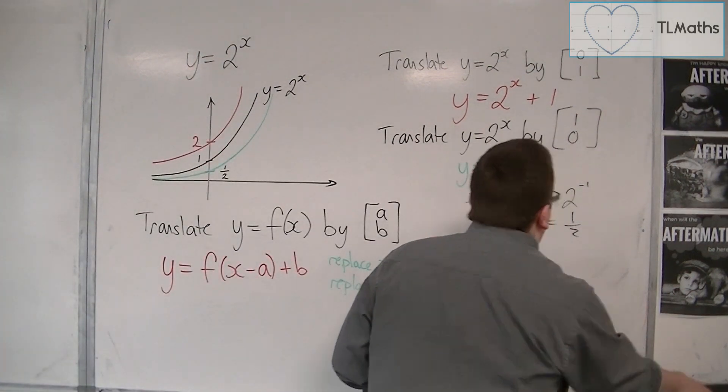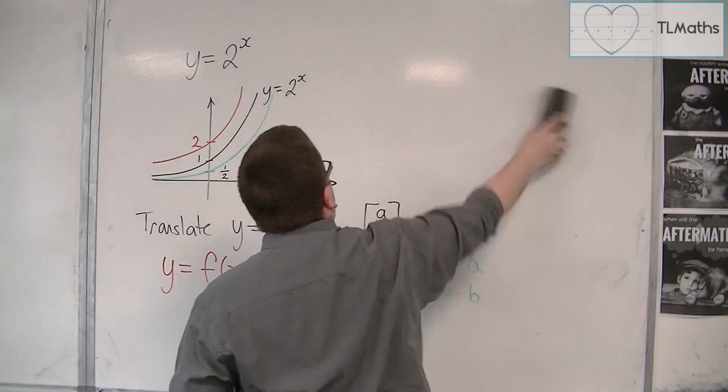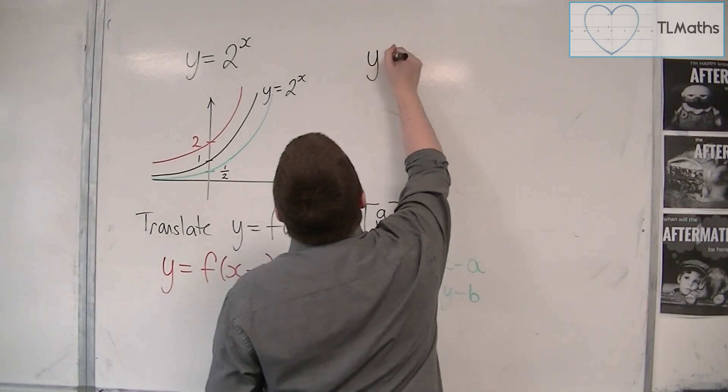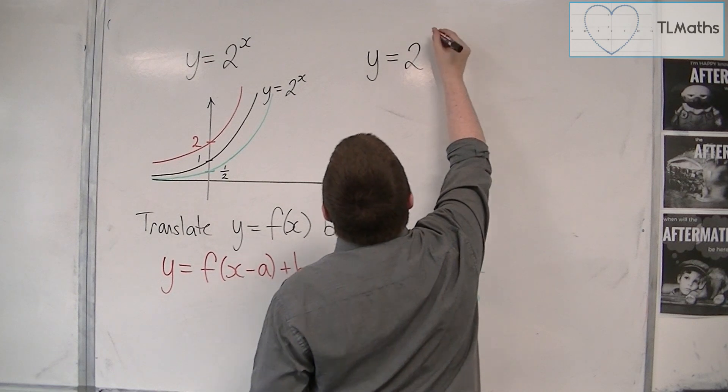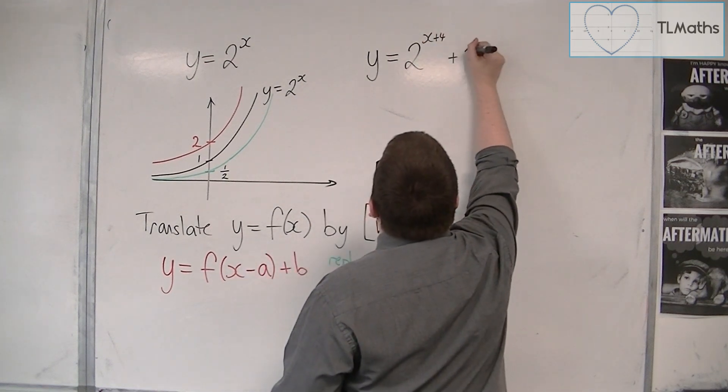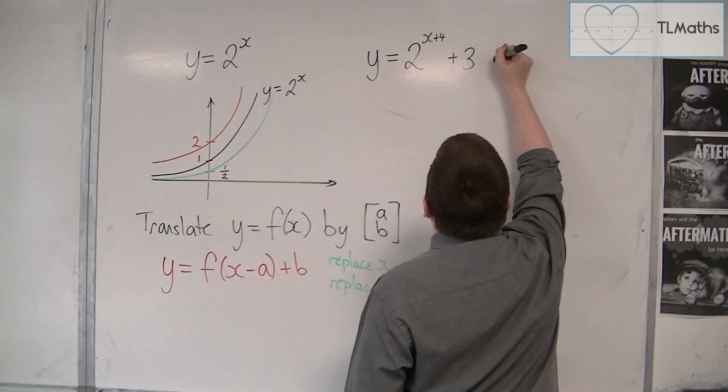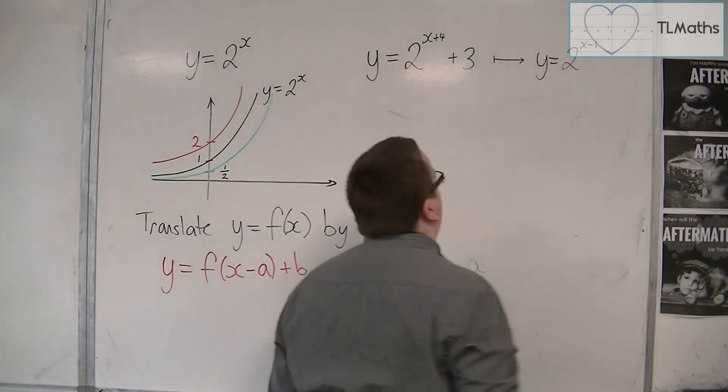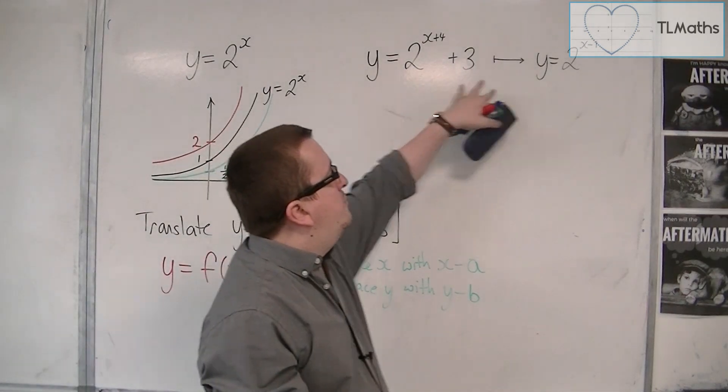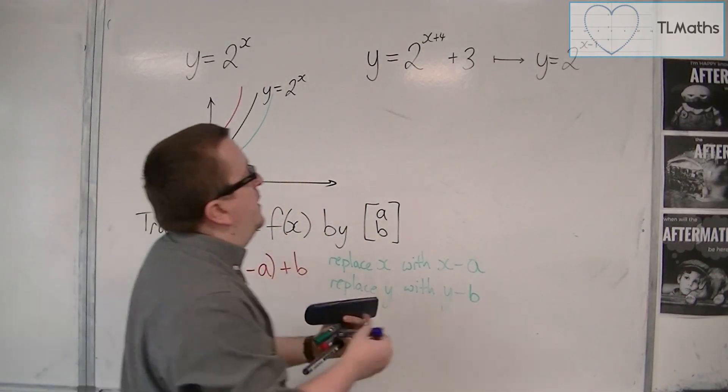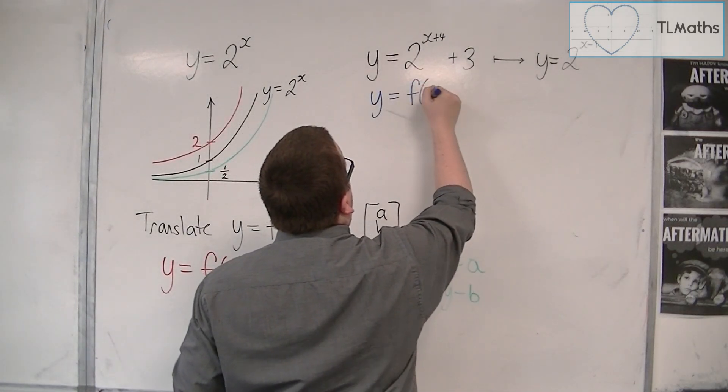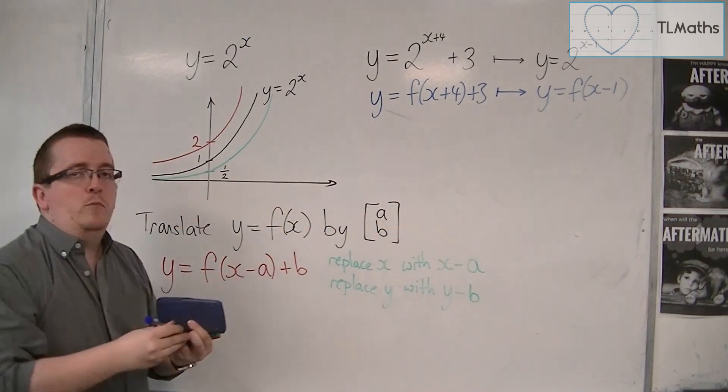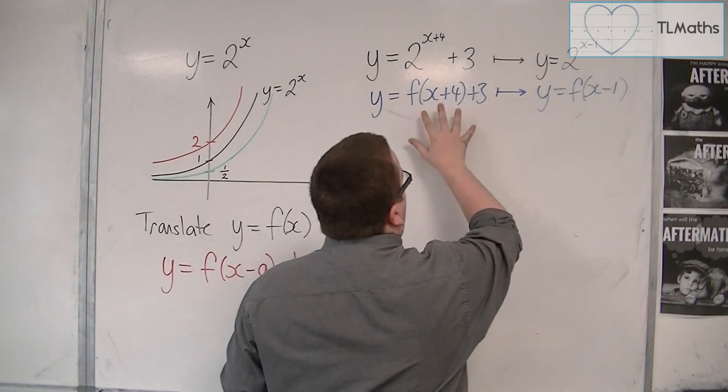But this is how we worked with translations and how we can now work with them here. So, let's do it from the other way around. Let's write down a curve. So, let's say we've got the curve y equals 2 to the x plus 4 plus 3. And this is being transformed so that it is now y equals 2 to the x minus 1. So, describe the transformation that gets me from there to there. Effectively, what I'm doing, what I'm asking is how do I get from y equals f of x plus 4 plus 3 to y equals f of x minus 1. So, this is exactly the same question. So, this is a translation that gets me from here to here.